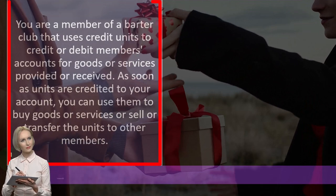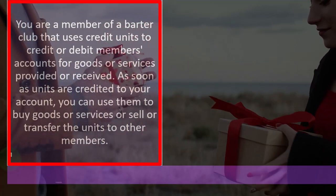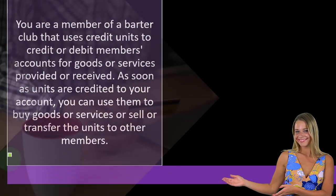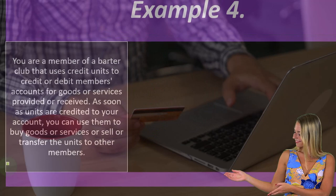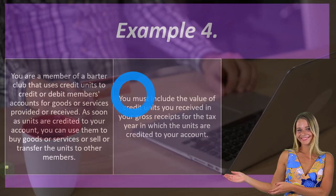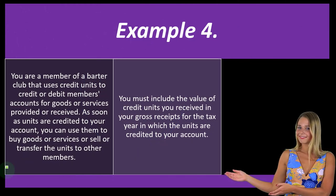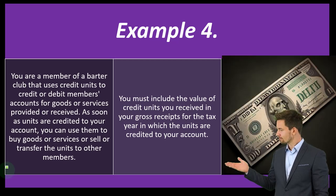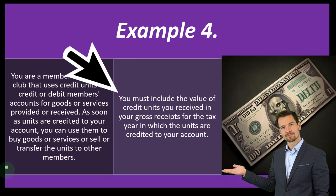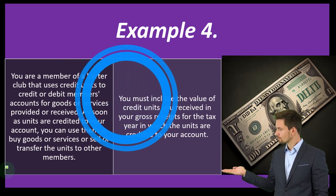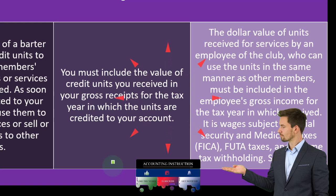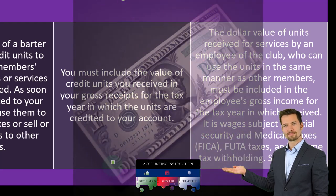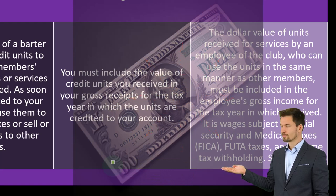Example four: you are a member of a barter club that uses credit units to credit or debit members' accounts for goods or services provided or received. As soon as units are credited to your account, you can use them to buy goods or services or transfer units to other members. You must include the value of the credit units you receive in your gross receipts for the tax year in which the units are credited to your account — essentially another form of cash-like valuation.